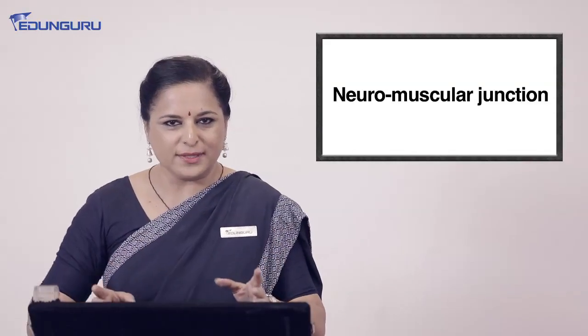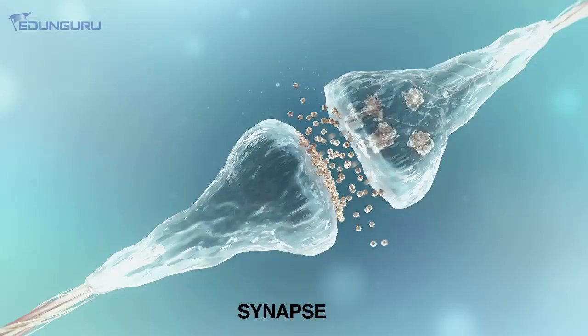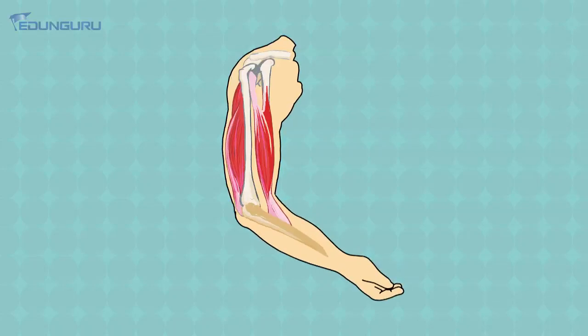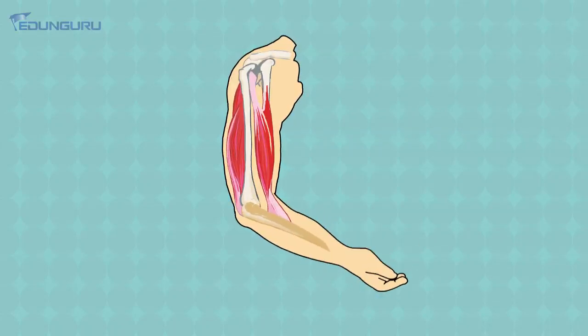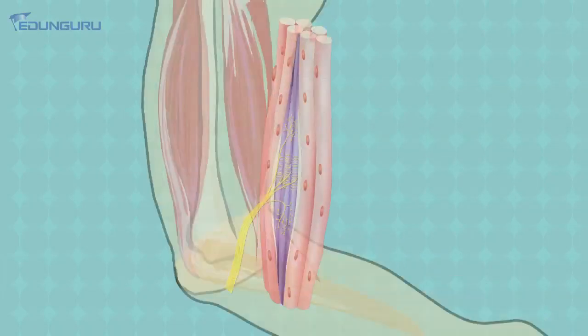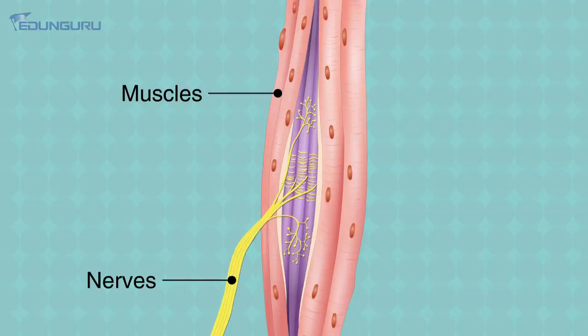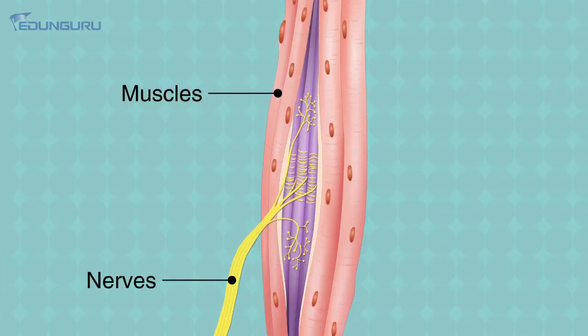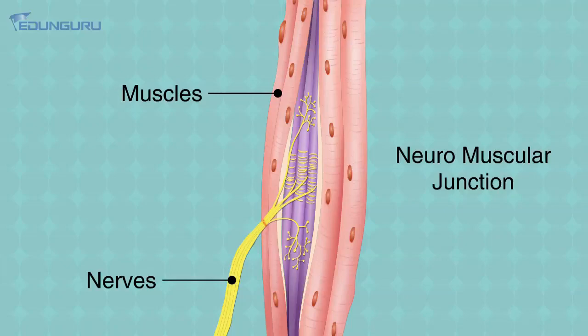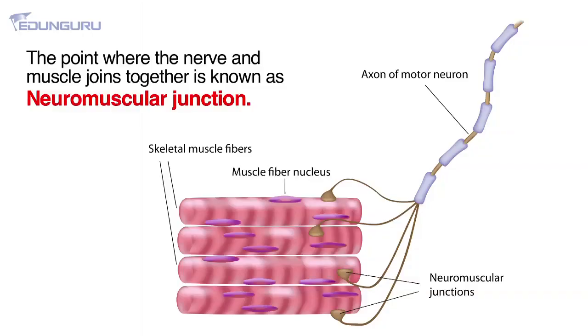Now we move on to the neuromuscular junction. We discussed that in between two neurons there is a gap known as synapse, where chemicals are released. Now, when we say we have to move our hand, the movement is also because of the muscles — we are able to move because of the energy stored in the muscles. The neuromuscular junction is the two together — the nerves and the muscles. When the muscle has to show action, the message has to be transferred to the muscle. So the part where the nerve is attached to the muscle is known as the neuromuscular junction. The electrical impulse travels through the nerve and the message is immediately transferred onto the muscle, causing the muscle to contract and produce the action.